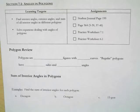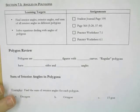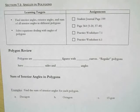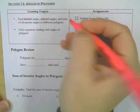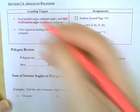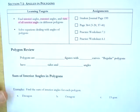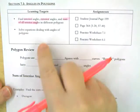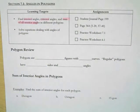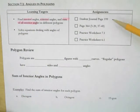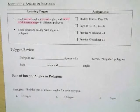Section 7.1 is angles and polygons. You have two different learning targets: you need to be able to find interior, exterior, and the sum of interior angles in different polygons. And then you have to be able to write and solve equations based on those three different types of angles. When we get done with the notes, you'll have four different assignments to finish in the next day and a half.